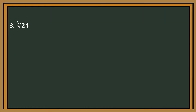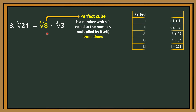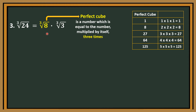Number 3: cube root of 24. 24 is not a perfect cube, so we need to factor it. We think of two factors wherein one factor is a perfect cube. Cube root of 8 times cube root of 3. A perfect cube is a number equal to a number multiplied by itself 3 times. The cube root of 8 is 2, because 2 times 2 times 2 equals 8. So we have now 2 cube root of 3.